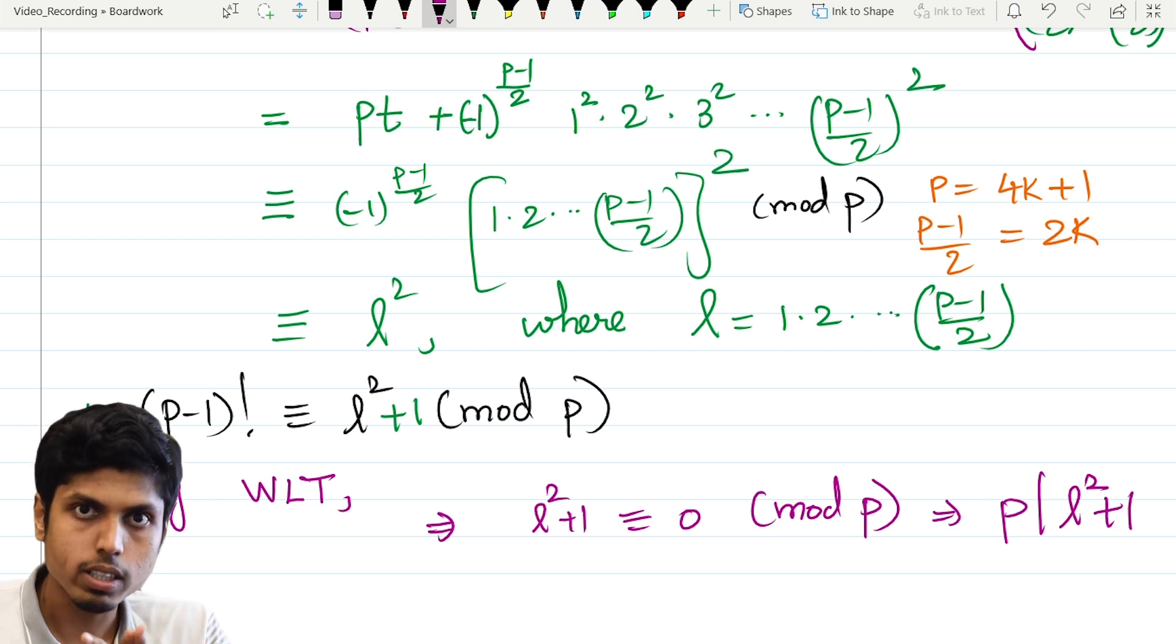So we have proved that easily using Wilson's theorem and the fact that p is a prime of the form 4k plus 1. So the notes of this video will be available in the description. You may go and download. We will meet in the next video. Thank you.